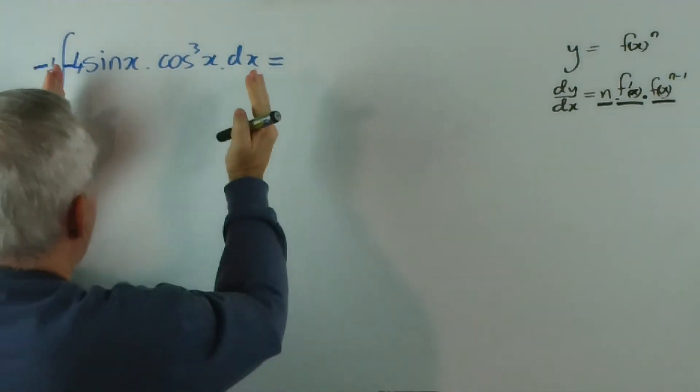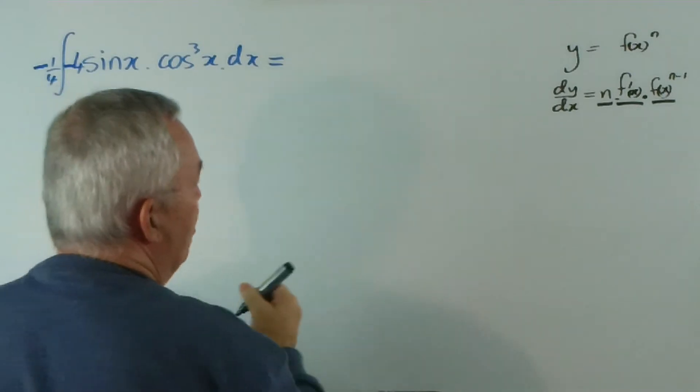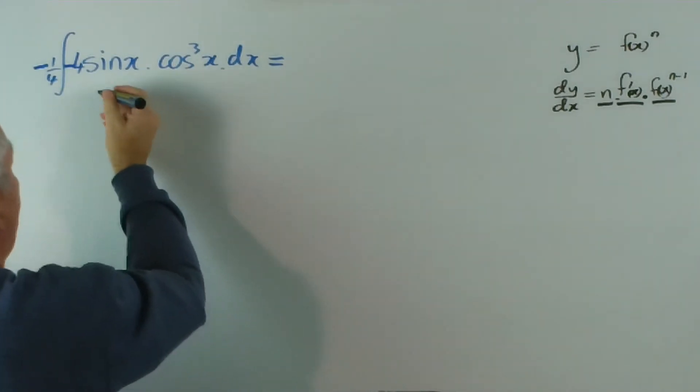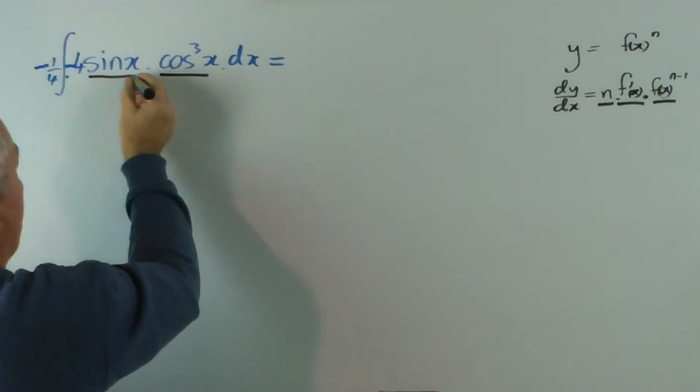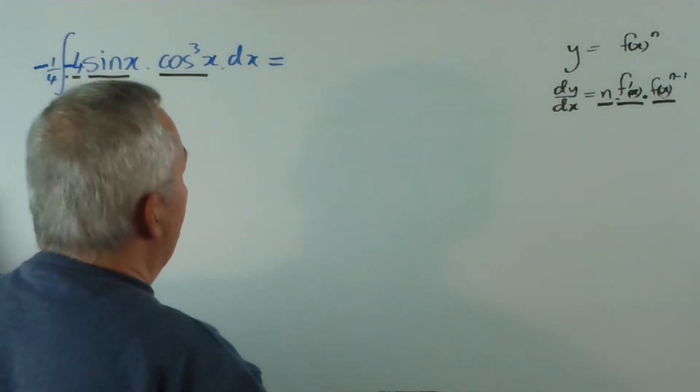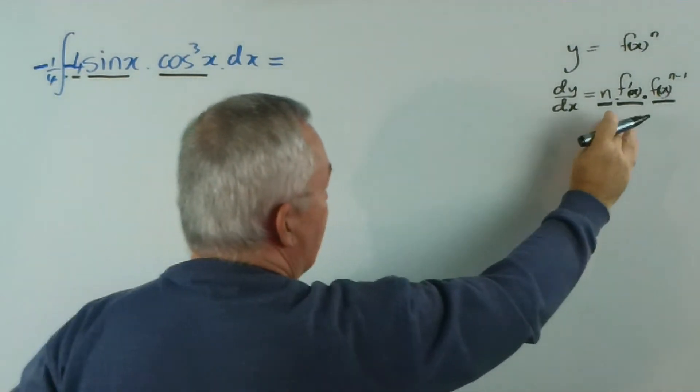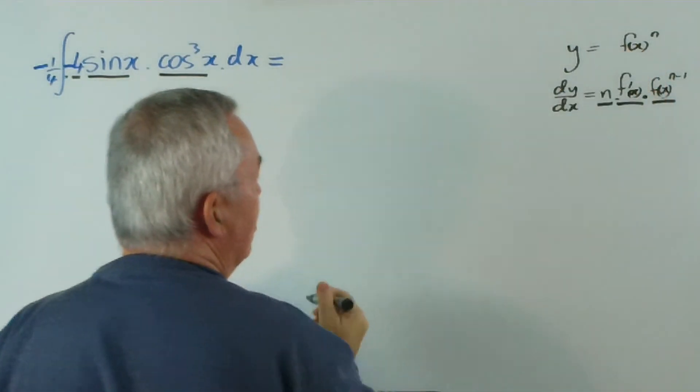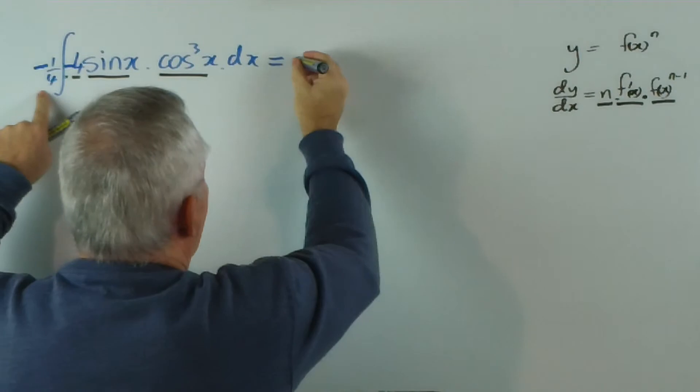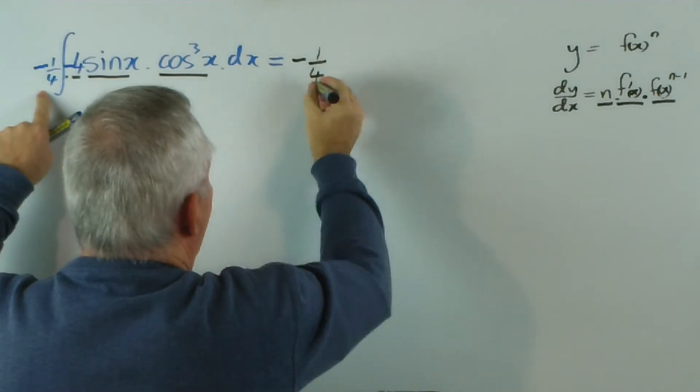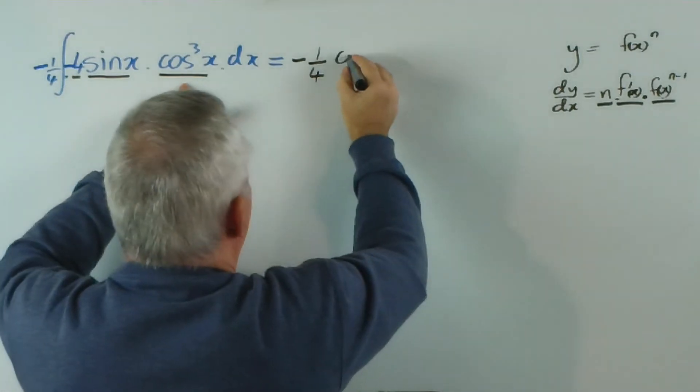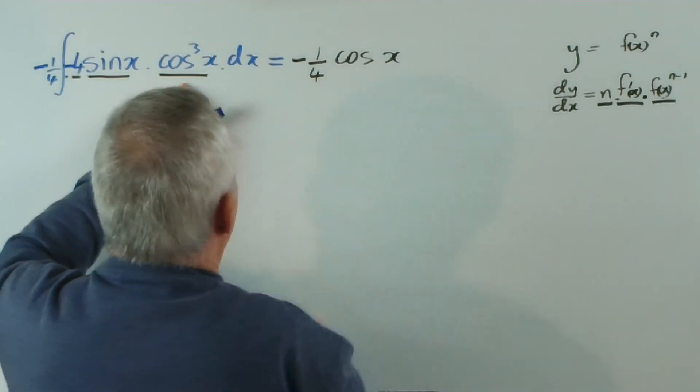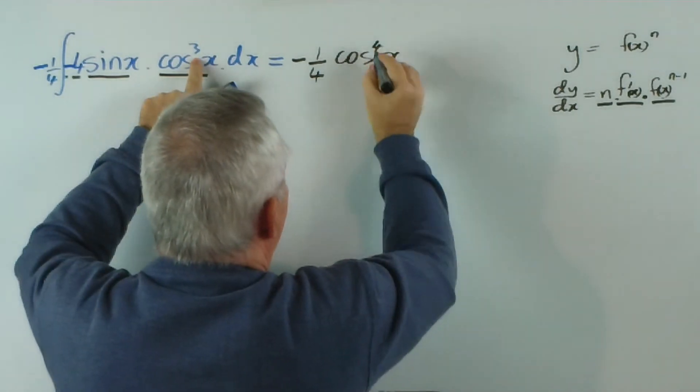And that means that my integral now has all three components. It has the function to a power, it has the derivative, and it has the number. And it's now perfectly designed to produce that as its integral. So at the front I'm going to have negative one-quarter. And the integral of this is going to be cosine x to the power of four plus c.